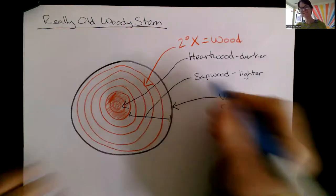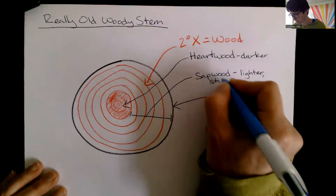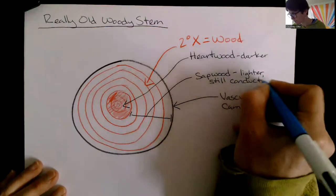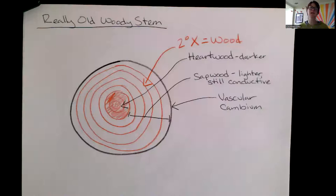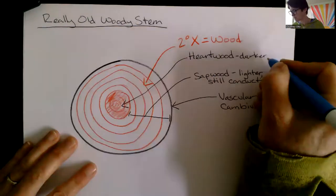Now sapwood, as that name implies, is sappy, right? And what that means is it's still conductive. It's still going to do exactly what you'd expect xylem to do. It's still going to be transporting water and minerals dissolved at the root surface up in the plant. Now heartwood isn't going to be conductive anymore.